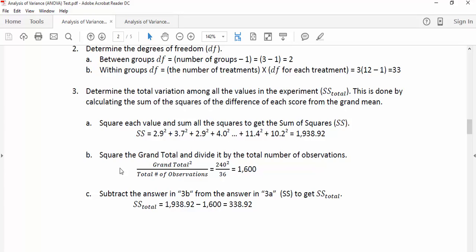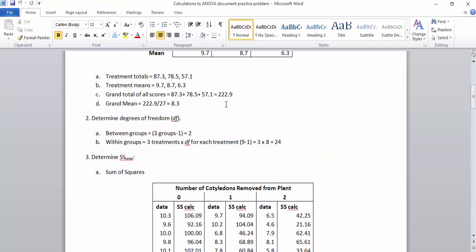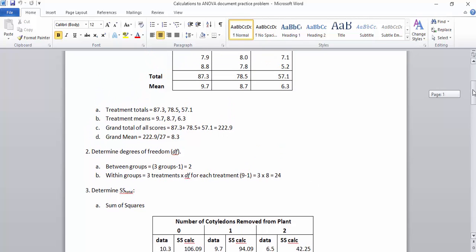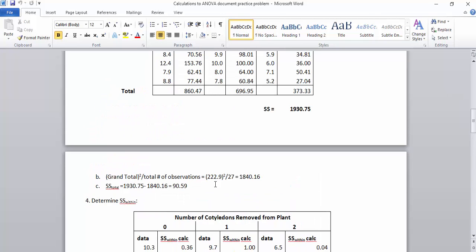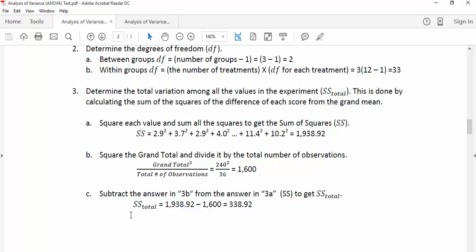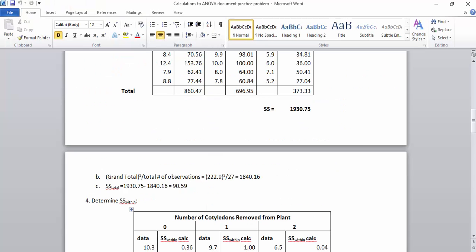Next, we take the grand total, which we've already calculated, and divide it by the total number of observations. So our grand total was 222.9, and our total number of observations was 27. So I'm going to take that 222.9 and square it, and divide by 27, and I get 1,840.16. Finally, we subtract the answer in B here from the answer in A. So I subtracted 1,840.16 from 1,930.75, and my sum of squares total came out to be 90.59.